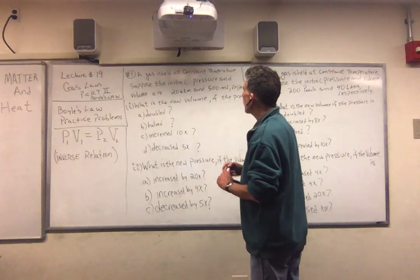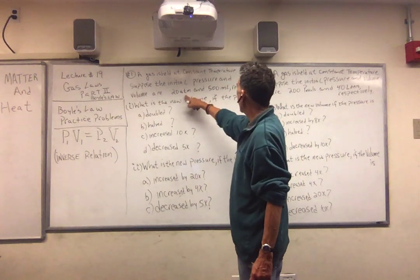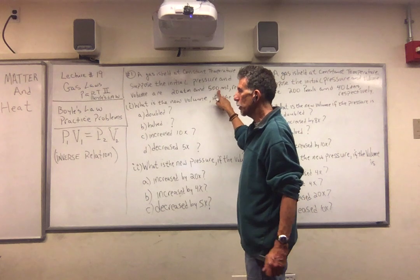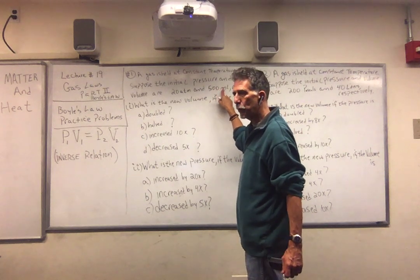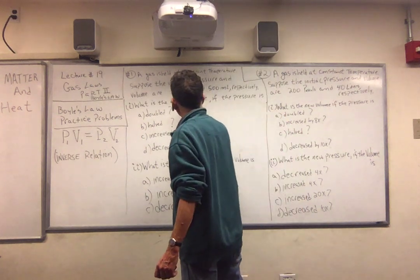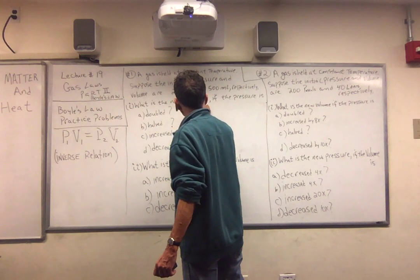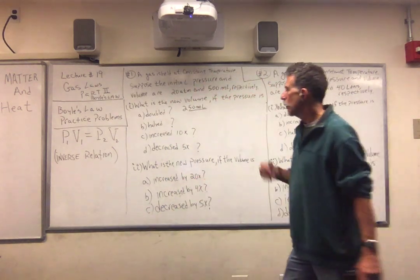So if I double the pressure — make that twice — it has to be half the volume. What is half of 500? The new volume is 250 mL. That's our answer.